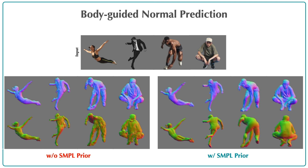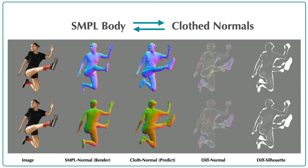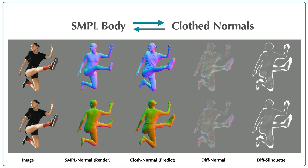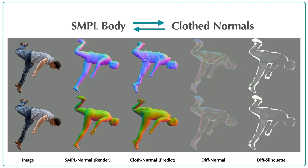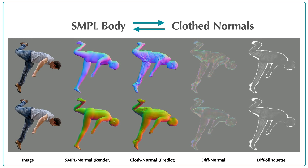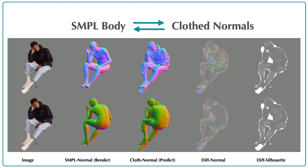This figure shows how robust the simple-body-guided clothed normal prediction is — even the backside normals are accurate in challenging poses. We further propose a new refinement paradigm to alleviate reconstruction misalignment introduced by the body estimator. During inference, we refine the clothed normals and simple body iteratively in a feedback loop. By minimizing the difference between the body normals and clothed normals, the body pose is refined, and conditioned on the refined simple body, clothed normals can be correctly predicted.